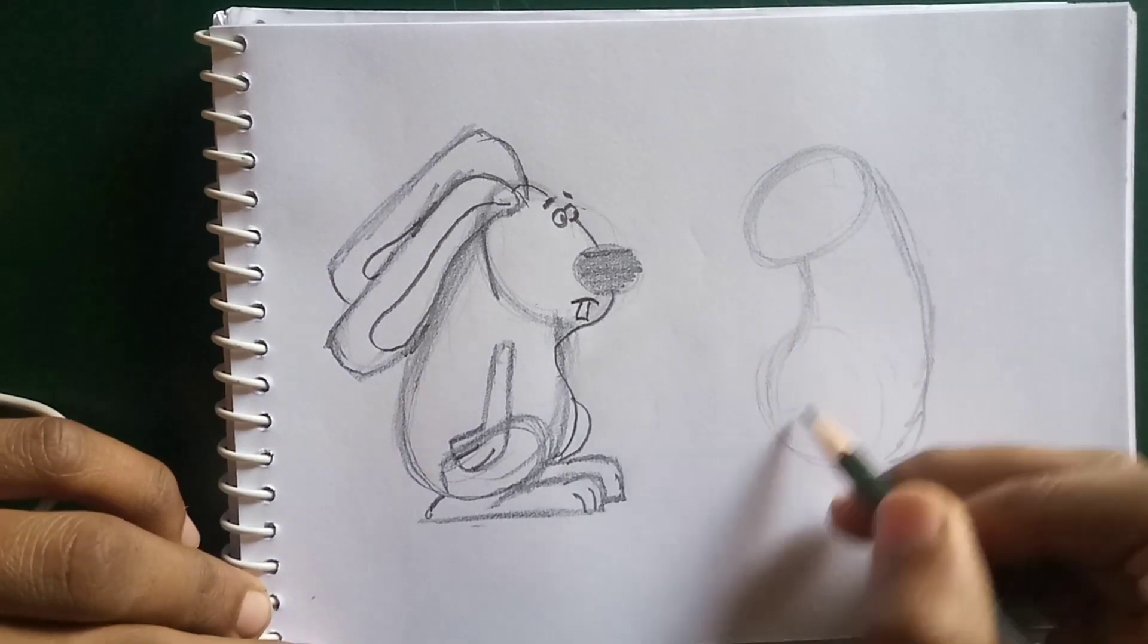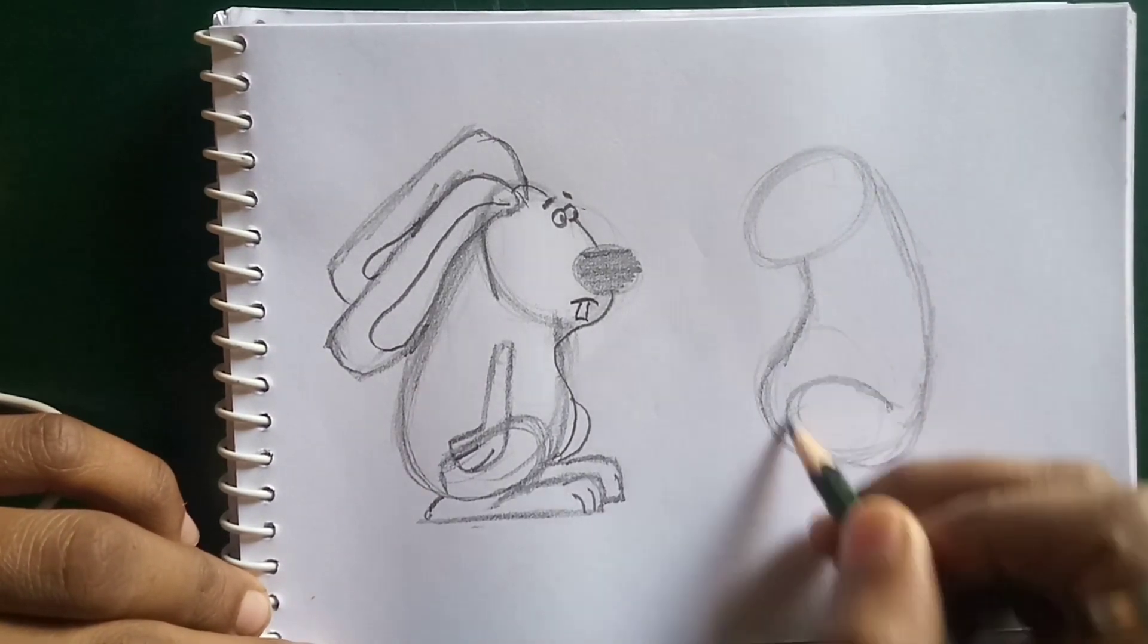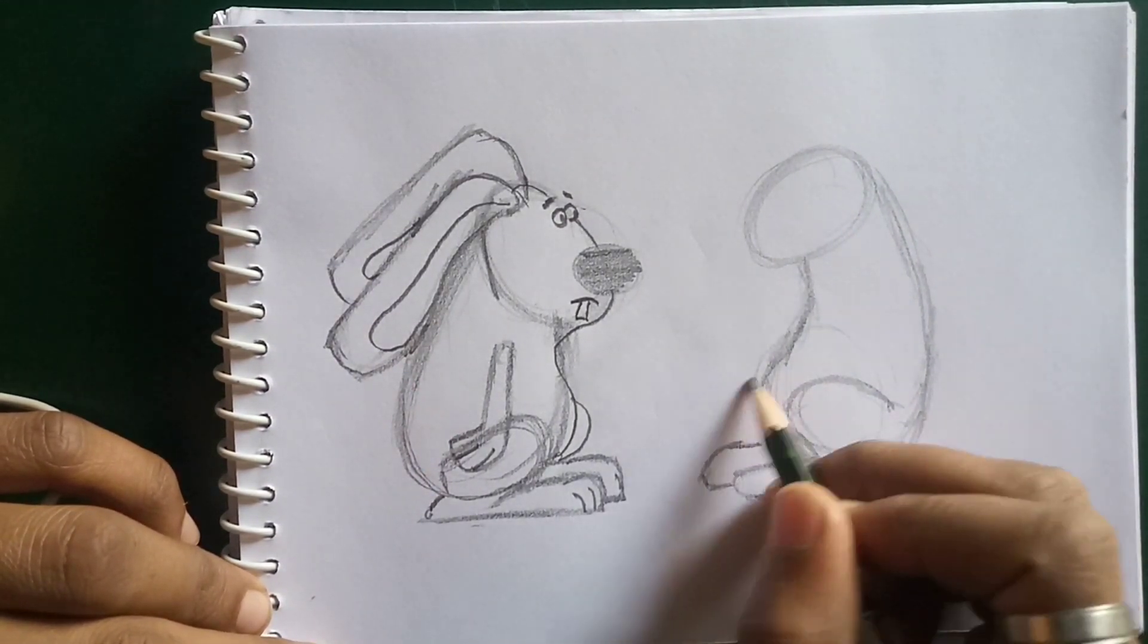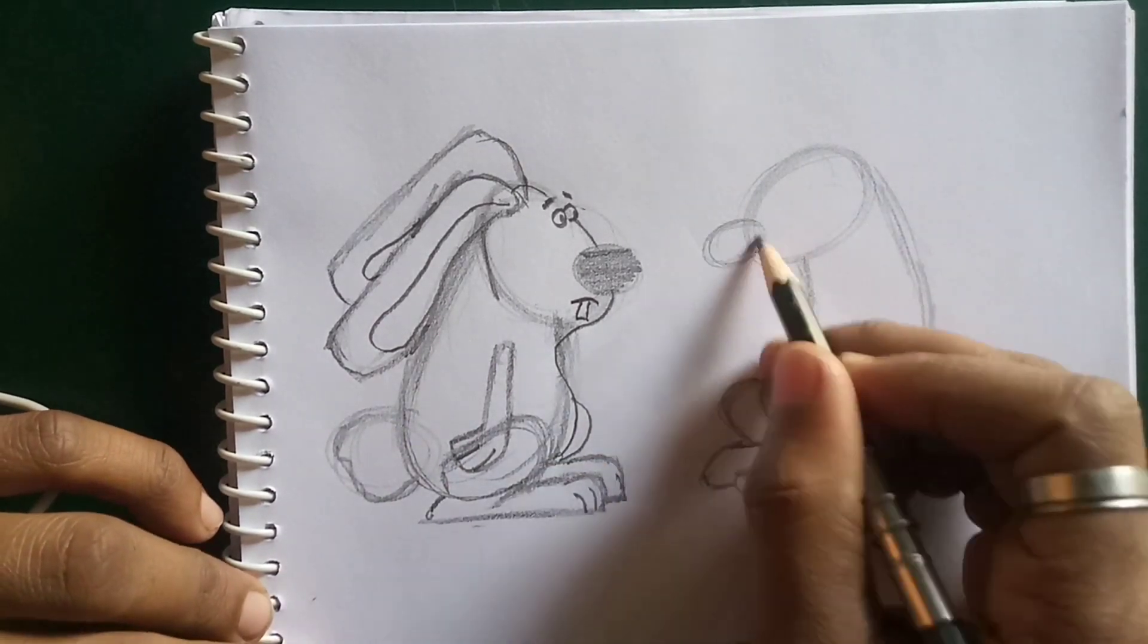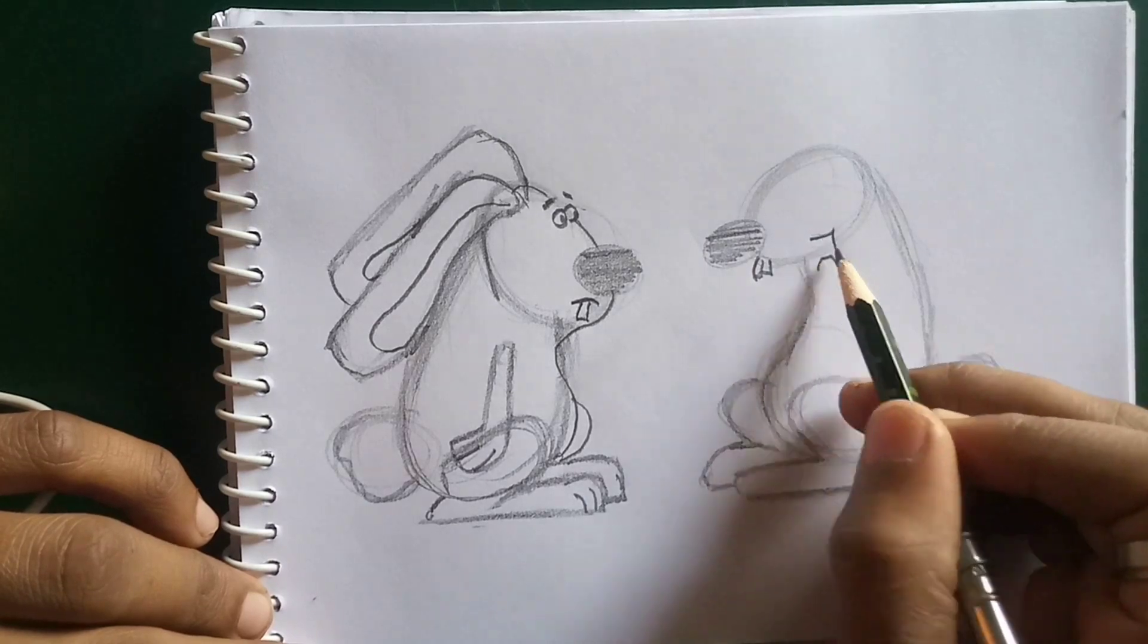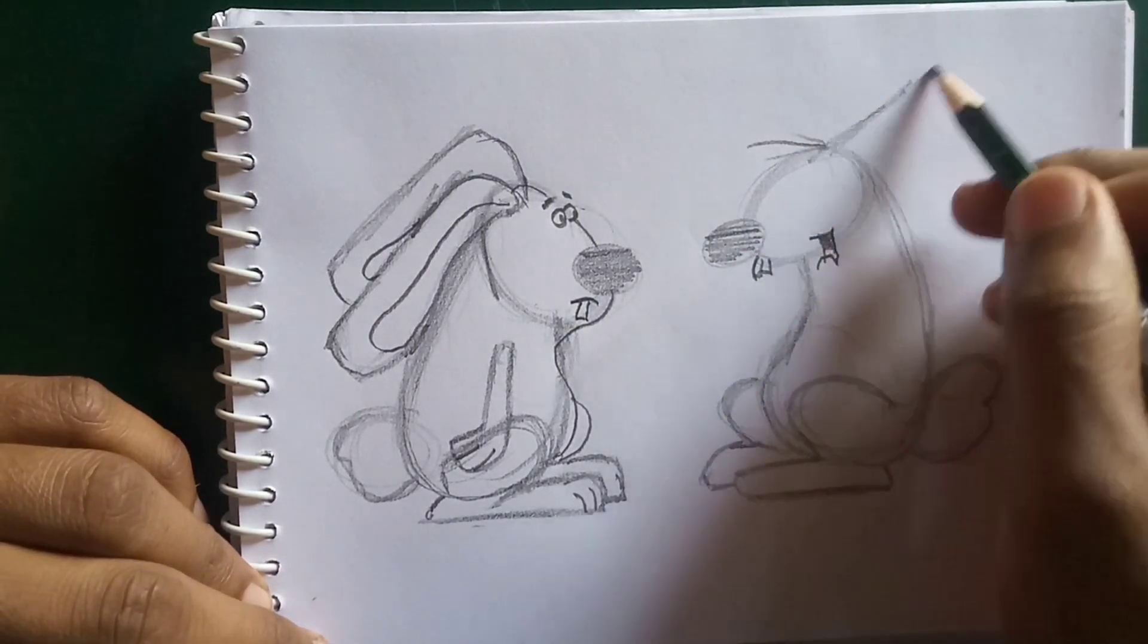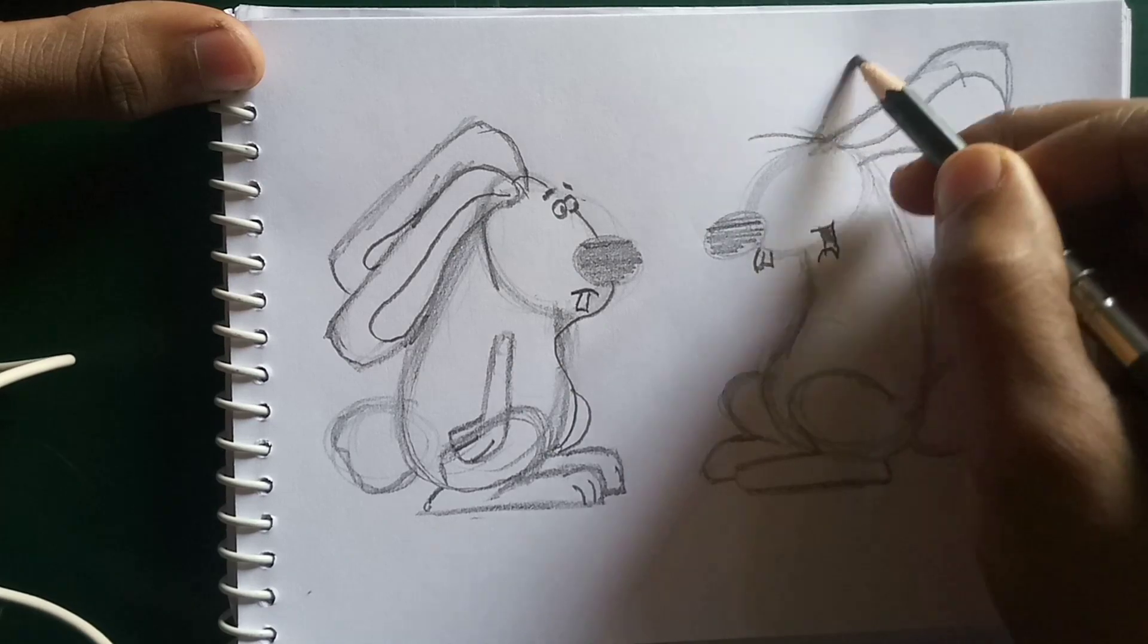Then once you use those undeniable rabbit-like qualities, you will be free to experiment with the rest of the creature, and it will still read as a rabbit no matter how outlandishly you design it.